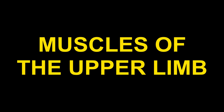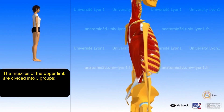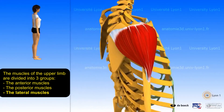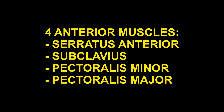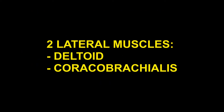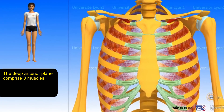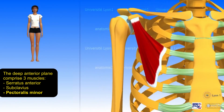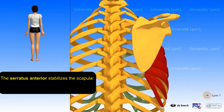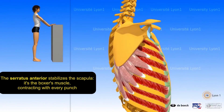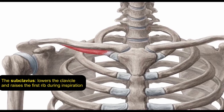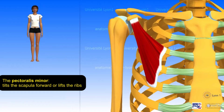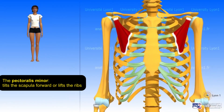Muscles of the upper limb. The muscles of the upper limb are divided into anterior, posterior, and lateral groups. The deep anterior plane comprises three muscles: the serratus anterior, which stabilizes the scapula and is known as the boxer's muscle; the subclavius, which lowers the clavicle and raises the first rib during inspiration; and the pectoralis minor, which tilts the scapula forward or lifts the ribs.